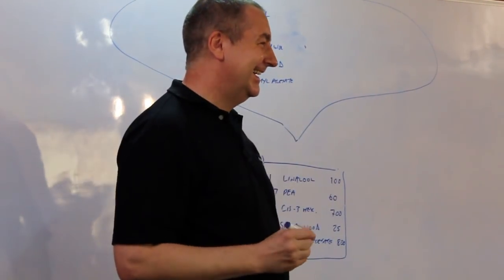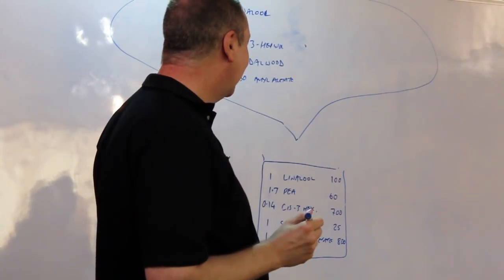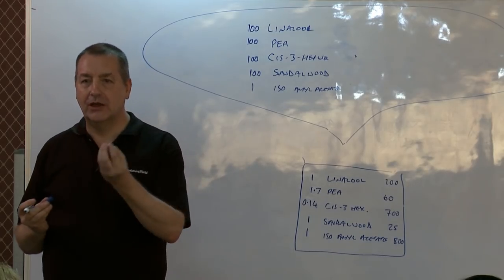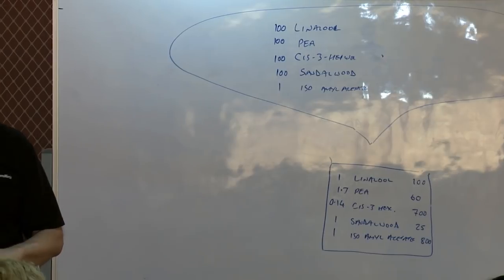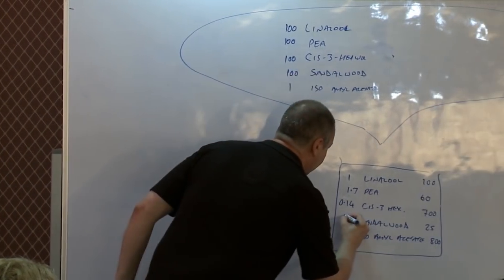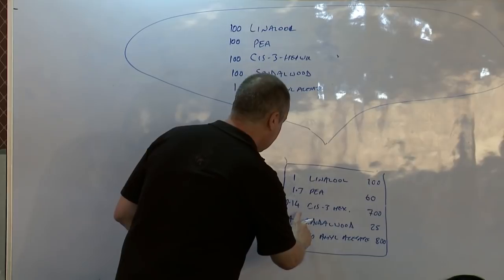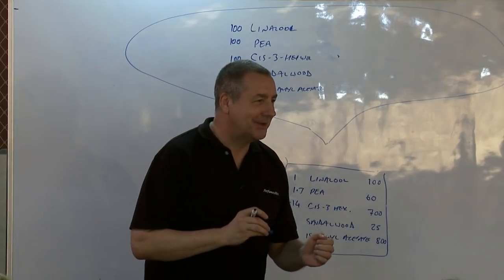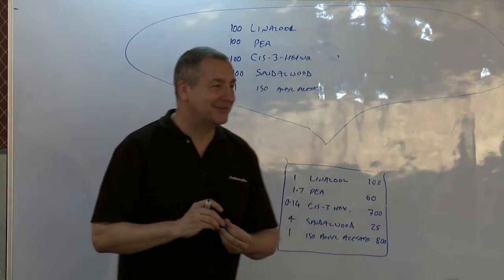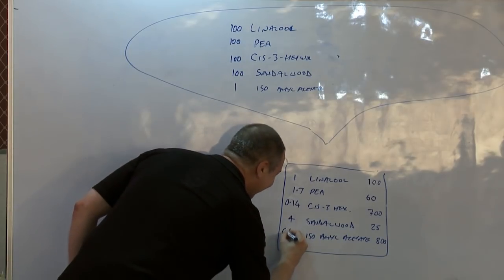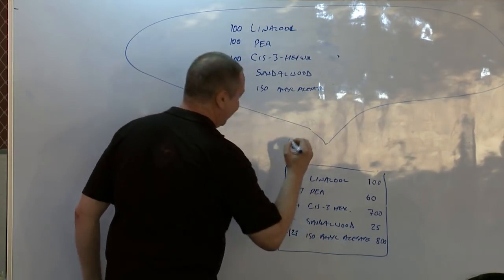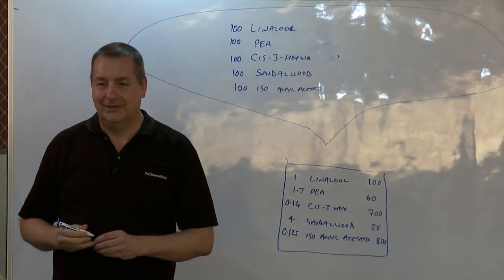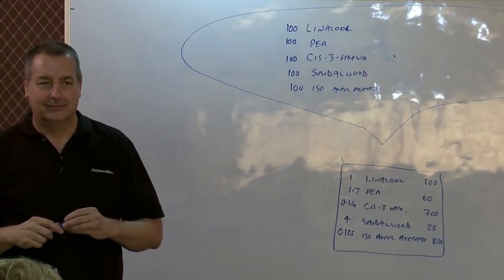0.14 of cis-3-hexanol. And how about the sandalwood? I want 100 odor units, if you like. 4 times 25 gives me 100. And isoamyl acetate, this is an easy one: 0.125. And that will give me a much more interesting perfume.